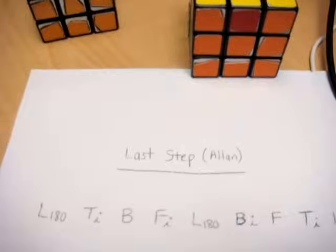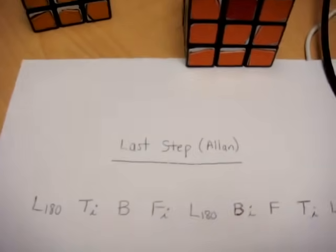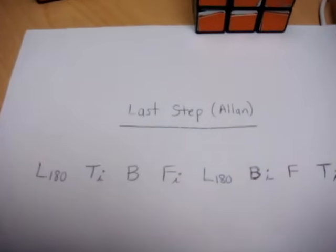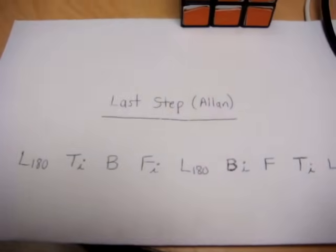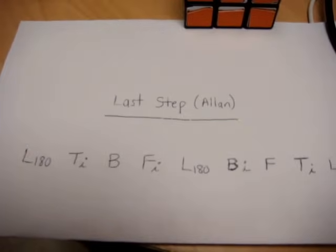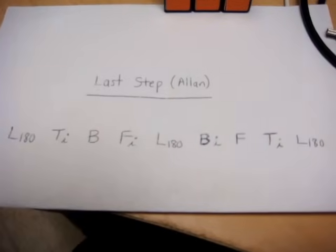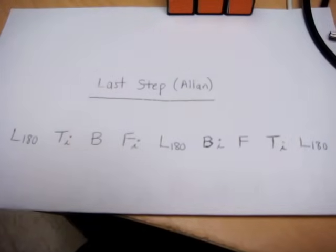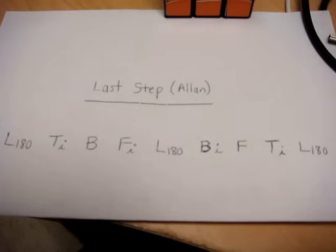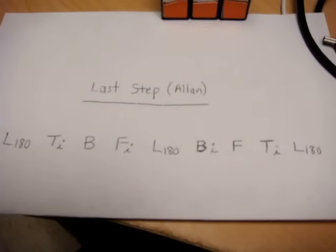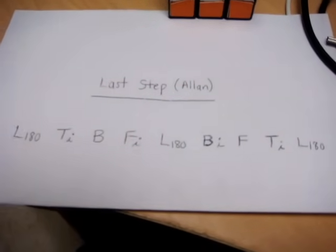There's only one algorithm left to know, and that's called the Allen. And that is: left 180, top counterclockwise, back clockwise, front counterclockwise, left 180, back counterclockwise, front clockwise, top counterclockwise, and left 180.